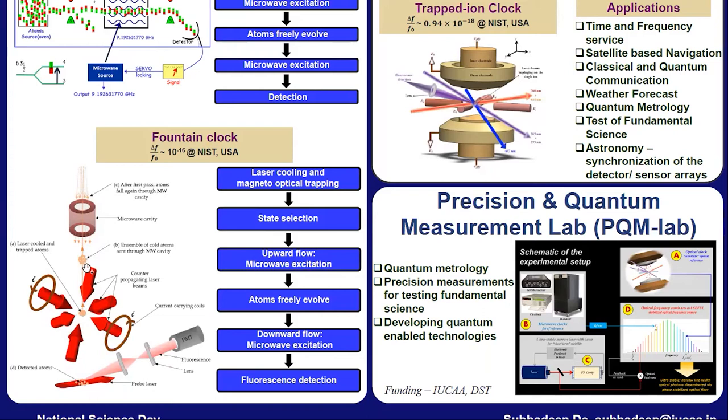After laser cooling and trapping, caesium atom is thrown upward towards the microwave cavity. It passes through the cavity and after reaching a certain height, it falls back due to gravity and passes through the cavity again. Finally, fluorescence is detected using a probe laser.